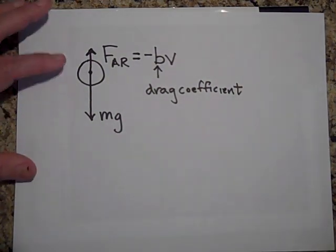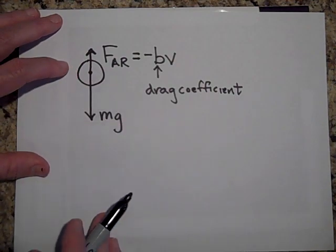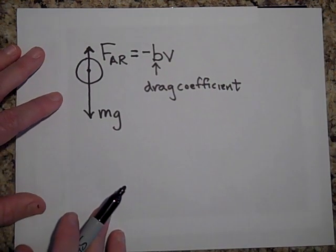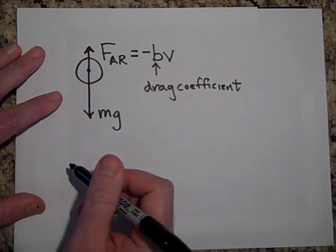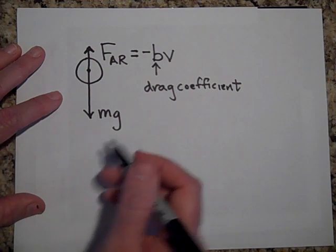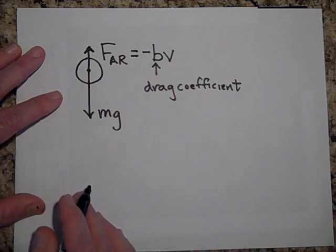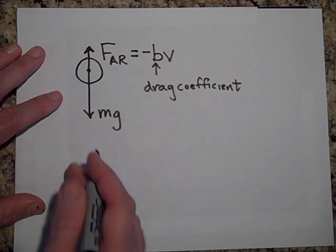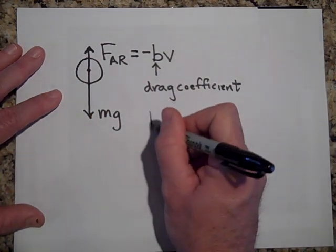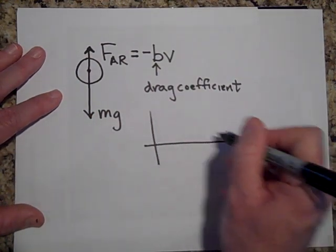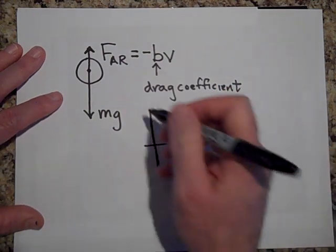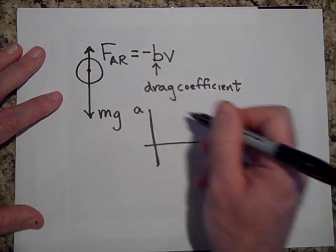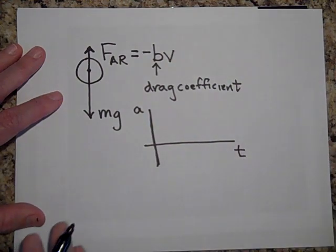The way that you can figure out how the velocity is going to change with time and acceleration is going to change with time is you just apply Newton's second law. But before we do that, let's just kind of guess which way these graphs are going to go. So let's first do the acceleration.